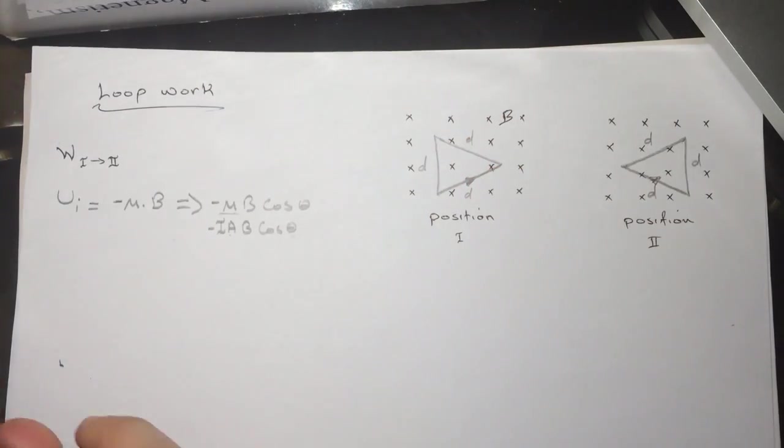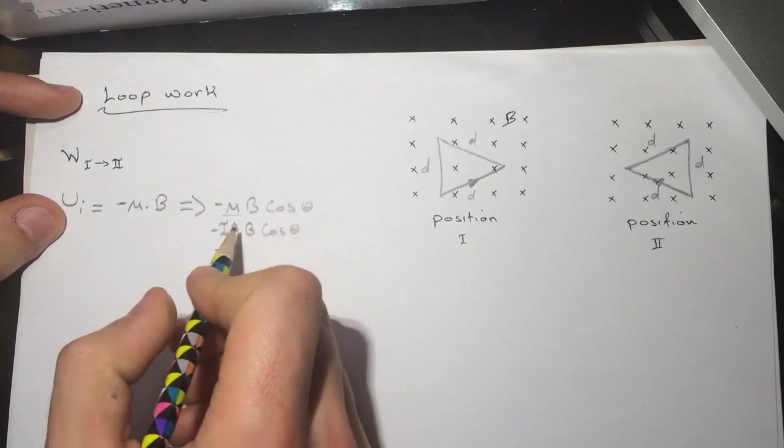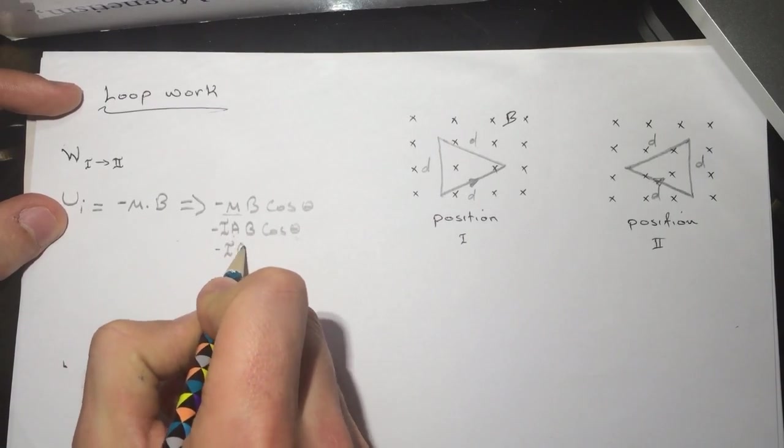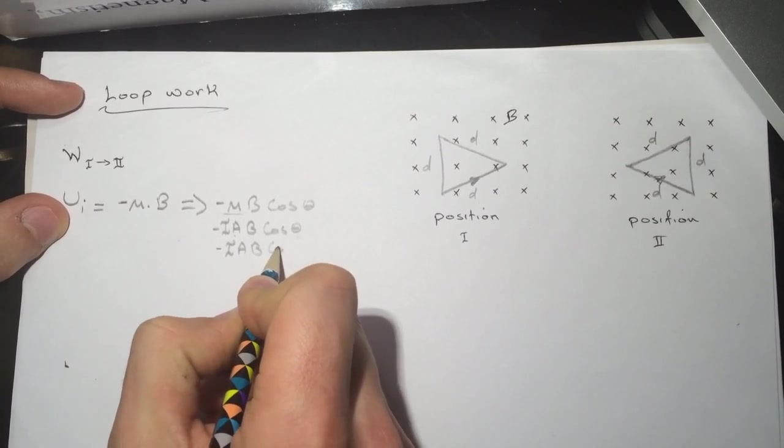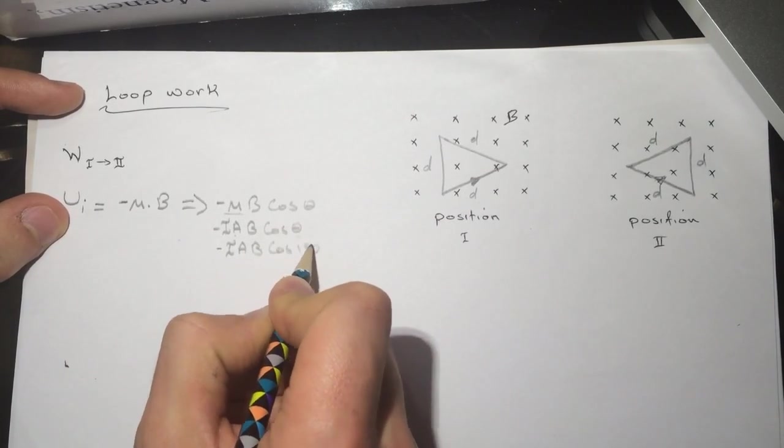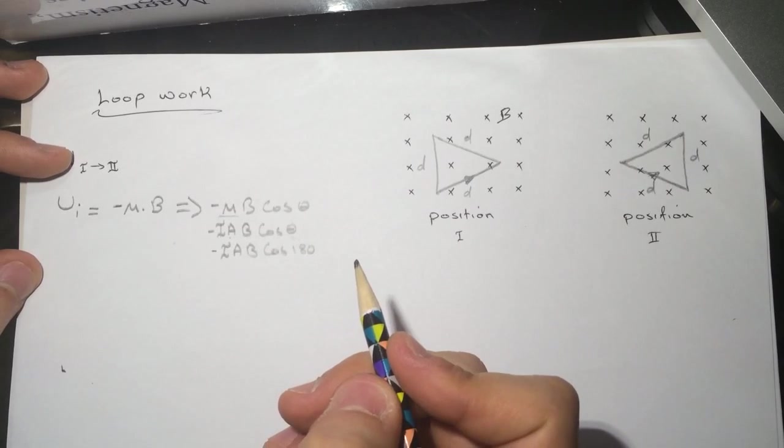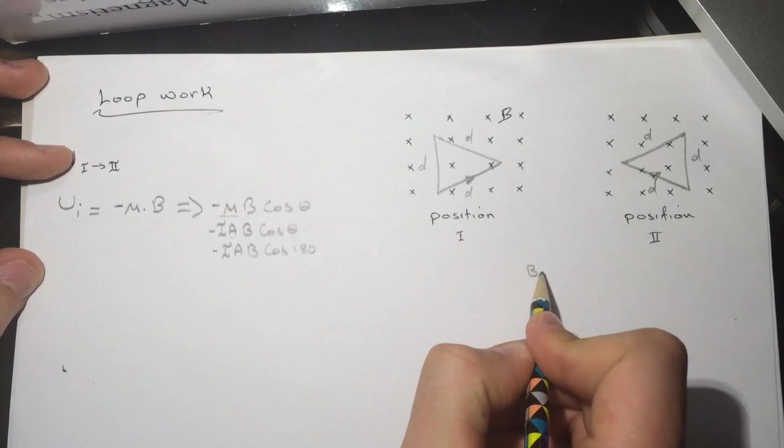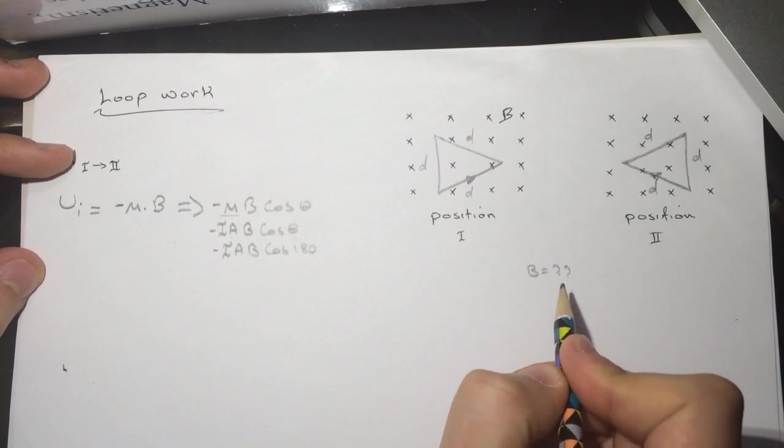The current is going this way, so the dipole moment is going up and the magnetic field is going down. The angle between them is 180, so minus IAB cosine 180.